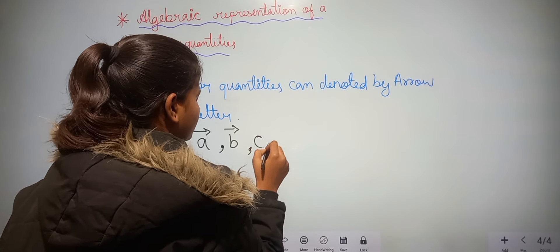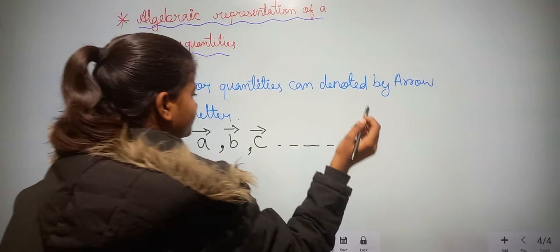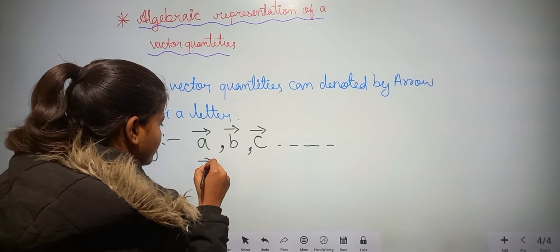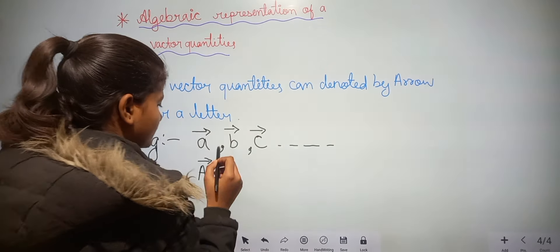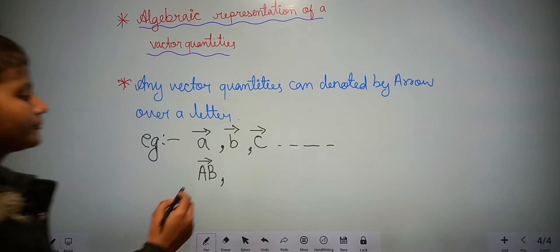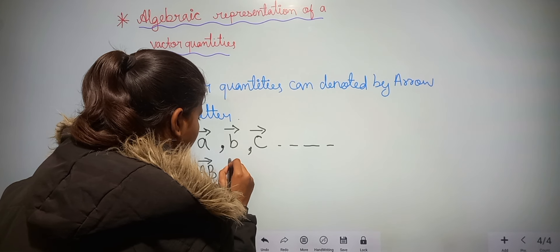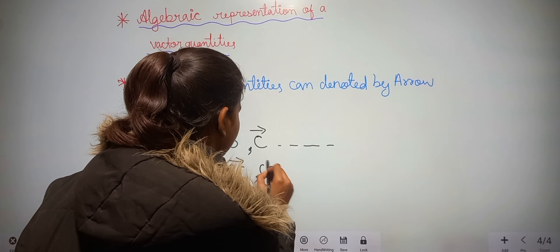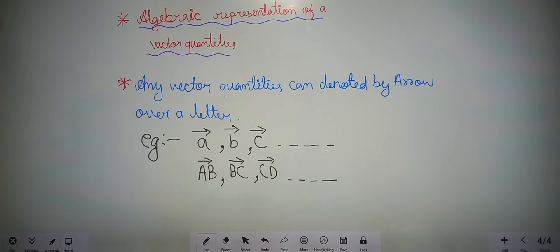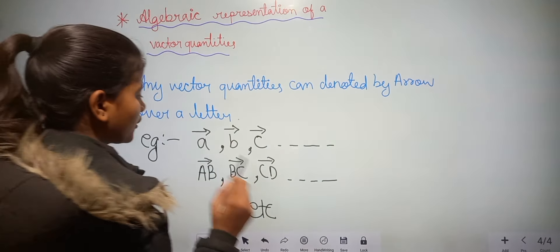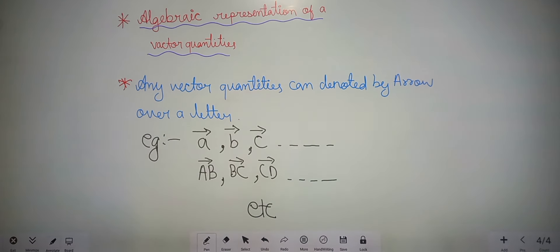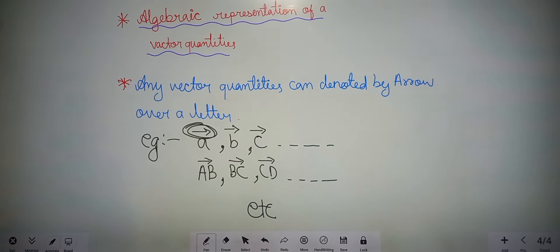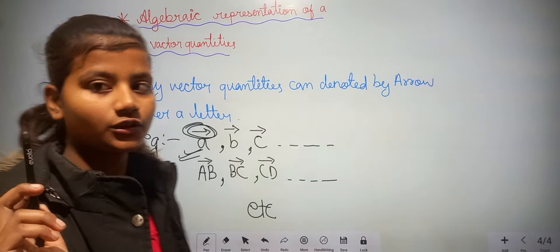This is also called a vector quantity. We can also write it as AB with an arrow over it — this is also called a vector quantity. And CD, and so on. You can see there are many examples. So, a vector quantity can be denoted by an arrow over a letter. If we put an arrow over a letter, then this is called a vector quantity.